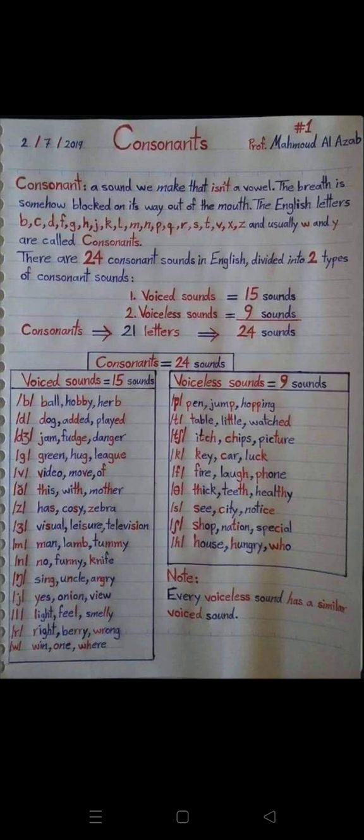Y (consonant) — onion. V — light, feel, smelly. R — right, berry, wrong. W — win, one, where.